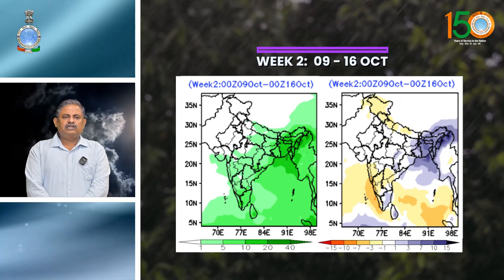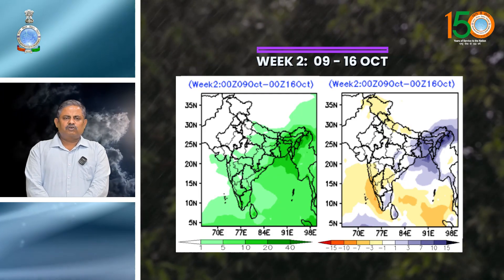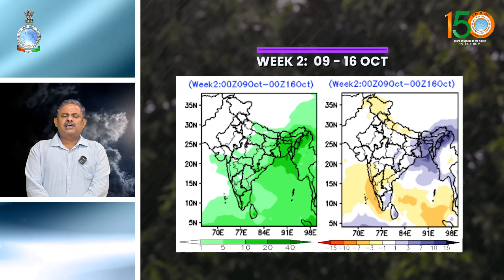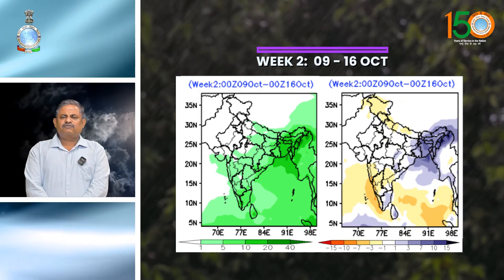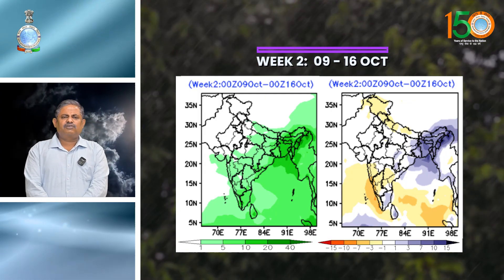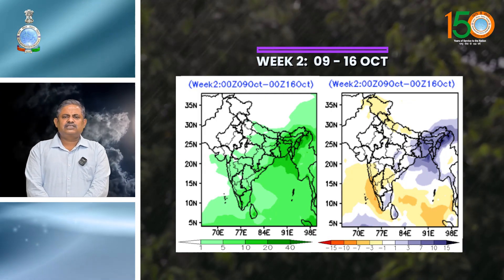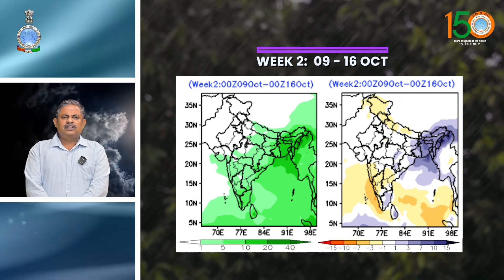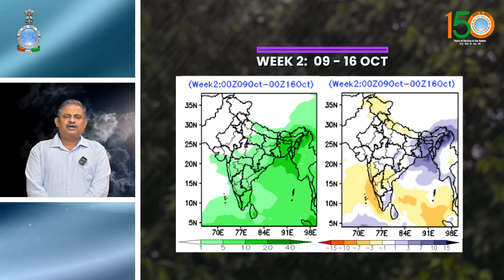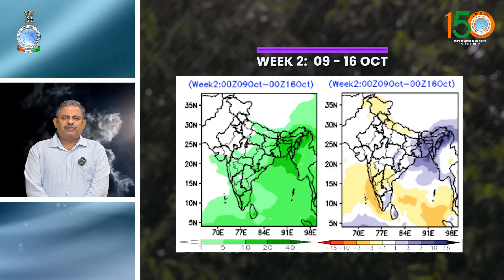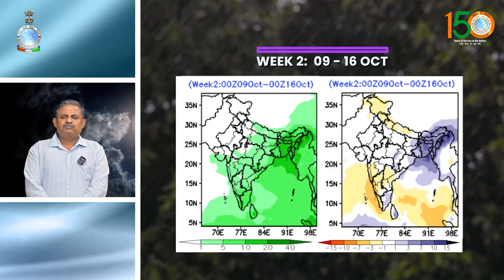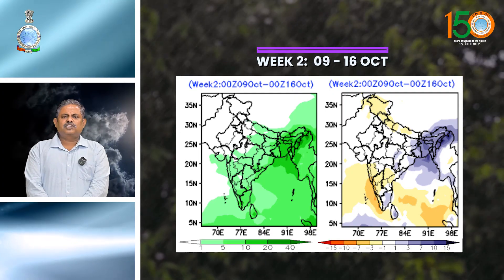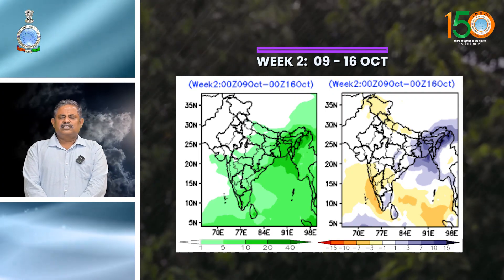For Week 2, from 9th to 15th October: under the influence of a likely formation of a low pressure area, fairly widespread to widespread rainfall with isolated heavy to very heavy rainfall is likely over most parts of east and northeast India, mainly during the first half of the second week. Conditions will also become more favorable for further withdrawal of the southwest monsoon from remaining parts of Gujarat, Madhya Pradesh, Uttar Pradesh, and some parts of Maharashtra and east India during the second week.